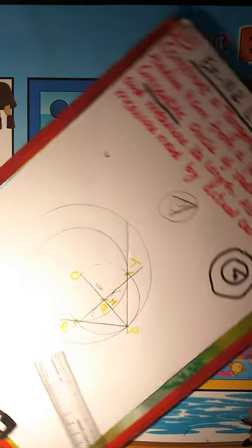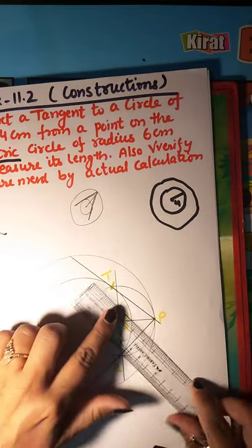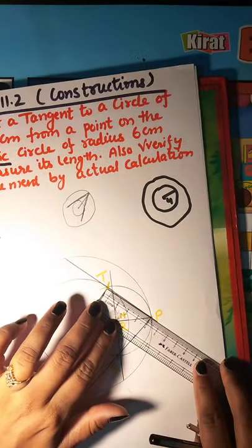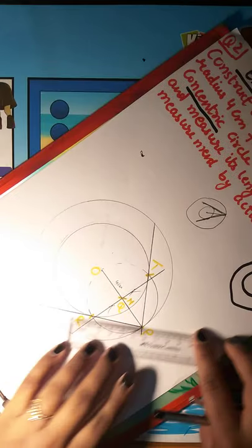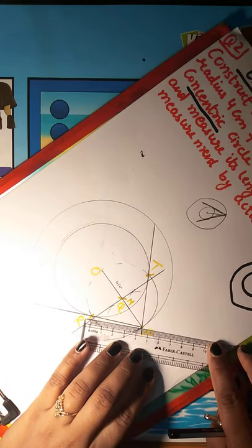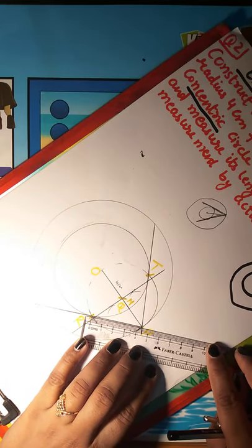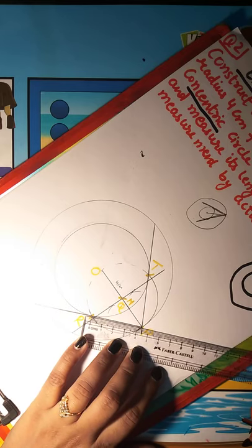Hence PT and PR the two tangents. Now you will measure their length. Look what is the length? PT's length is 4.5. From here you will see PR's length should also be 4.5. Yes, exactly 4.5, exactly same.